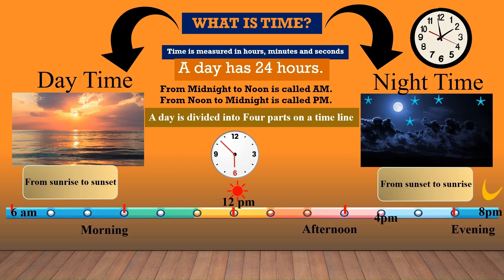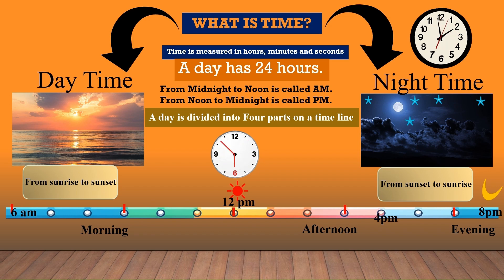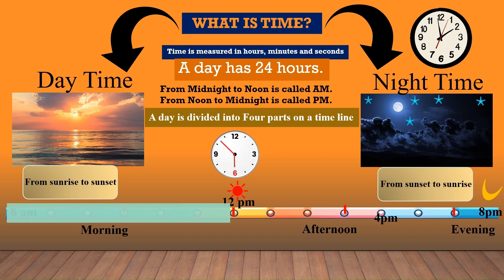Here it is marked: 6 AM to 12 PM is morning; 12 PM to 4 PM is afternoon; 4 PM to 8 PM we call evening; and after 8 to again 6 it is nighttime. You can see the progression of time from morning to night.